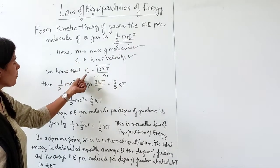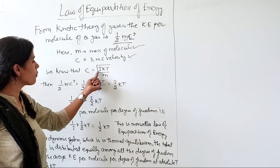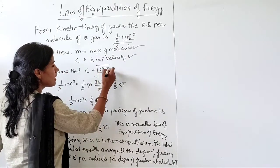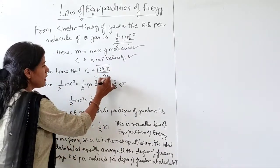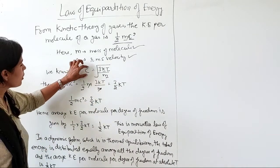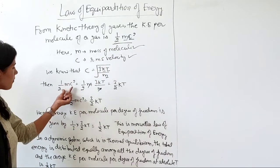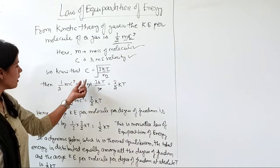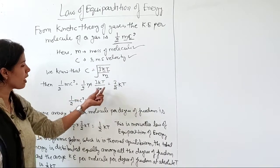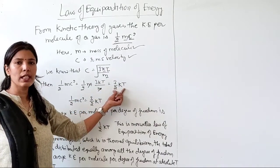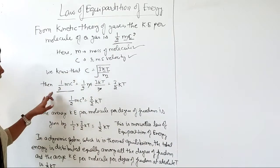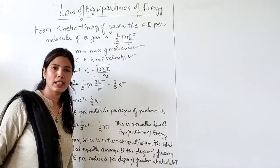Now, root mean square velocity has the value 3kT by m, where k is Boltzmann constant, T is absolute temperature, and m is mass of molecule. So if I put this c value in the formula, I have half mc square equals half m times 3kT by m. So m cancels, and this becomes 3 by 2 kT. So kinetic energy per molecule of gas is 3 by 2 kT.